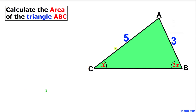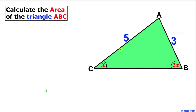Welcome to Pre-Math. In this video tutorial we have triangle ABC with two given side lengths, 3 and 5, as shown in the figure. Angle B is twice as much as angle C. We are going to find the area of triangle ABC, and we'll use trigonometry to get started with the solution.